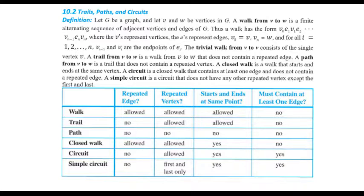A trail from V to W is a walk from V to W that does not contain a repeated edge. So a trail is a walk, but the only difference is it does not contain any repeated edges. A path from V to W is an even more confined version — it's a trail that does not contain a repeated vertex.